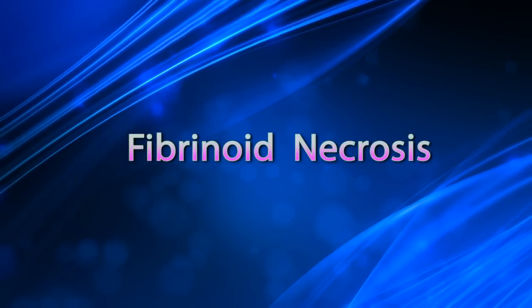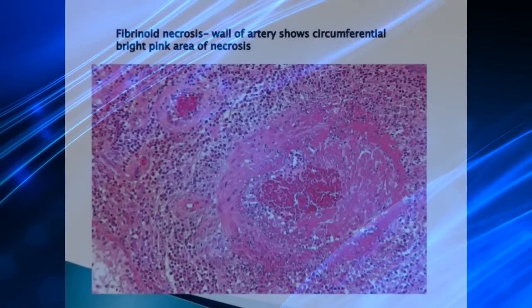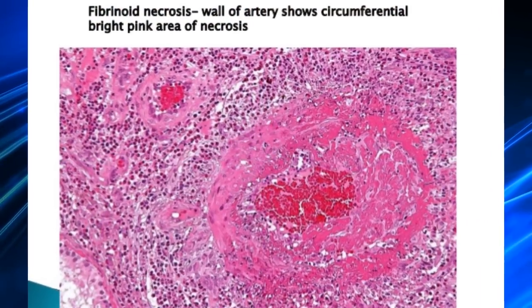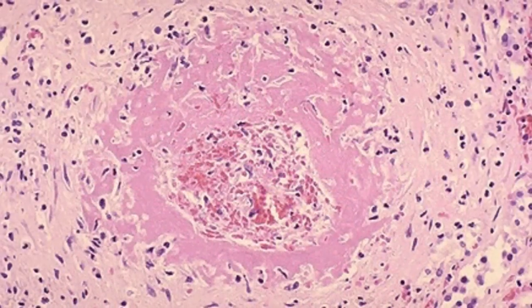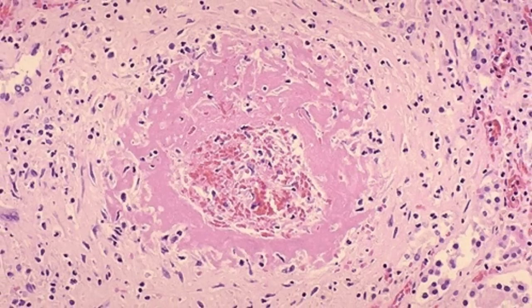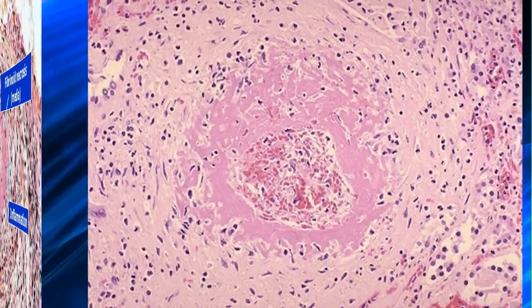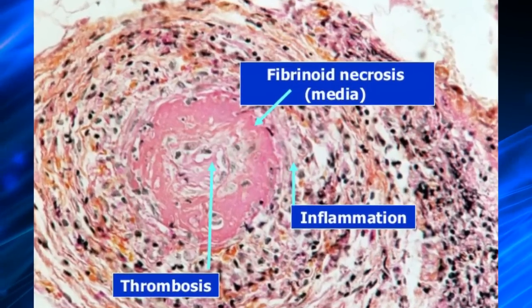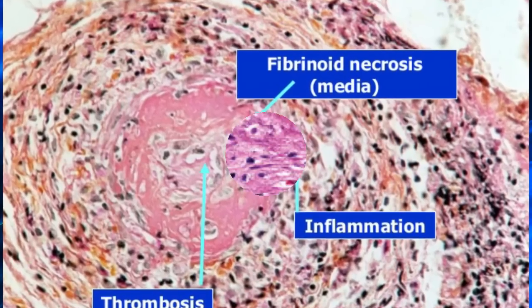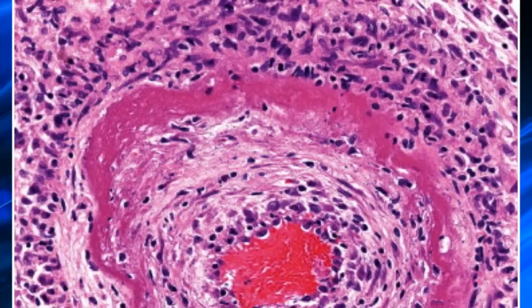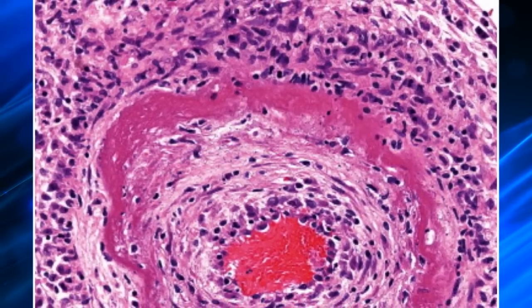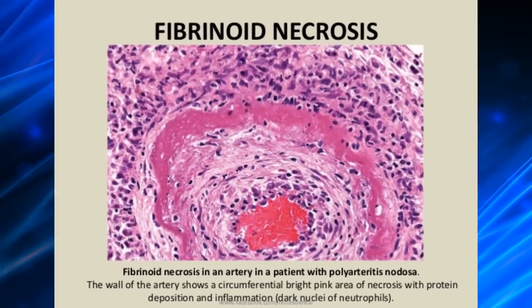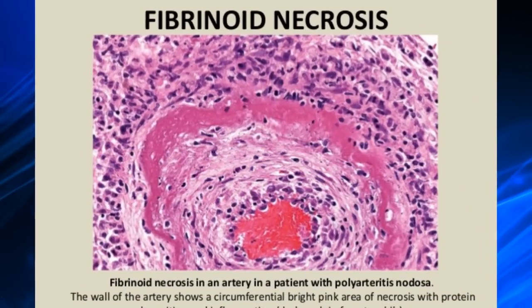Fibrinoid necrosis is a special form of necrosis visible by light microscopy, usually seen in immune reactions in which complexes of antigens and antibodies are deposited in the walls of arteries. The deposited immune complexes, together with fibrin that has leaked out of vessels, produce a bright pink and amorphous appearance on H&E preparations, called fibrinoid by pathologists.